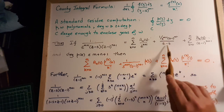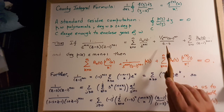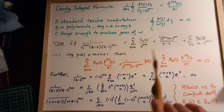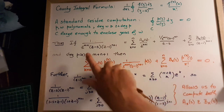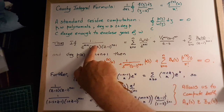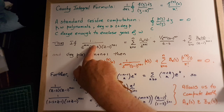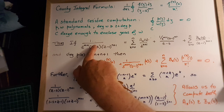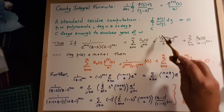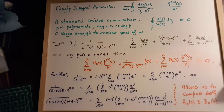The coefficient over z minus s is easy to identify. You cover up the z minus s, plug in z equals s in the remainder, and you get 1 over s to the n plus 1 times 1 over s minus 1 to the n plus 1. So at least we have identified that coefficient.